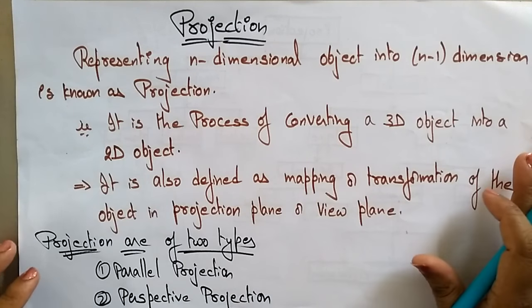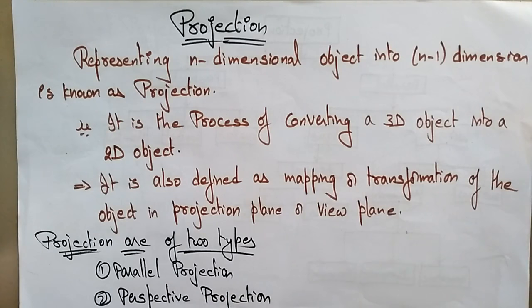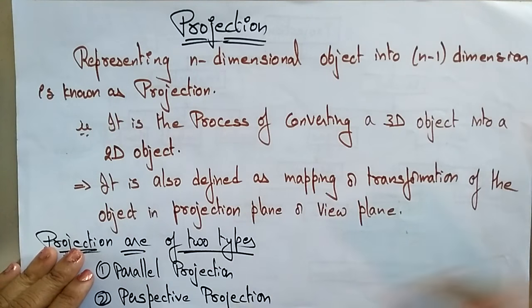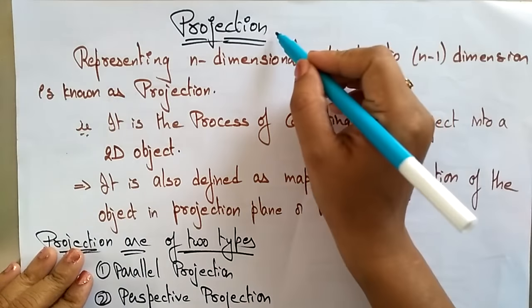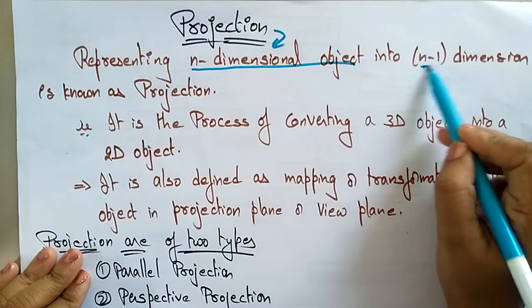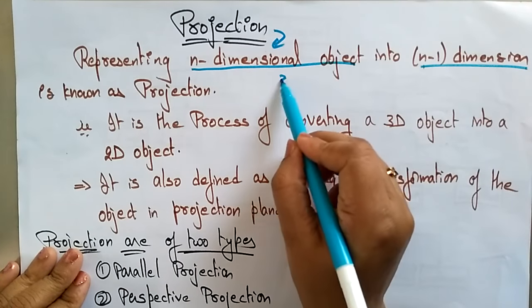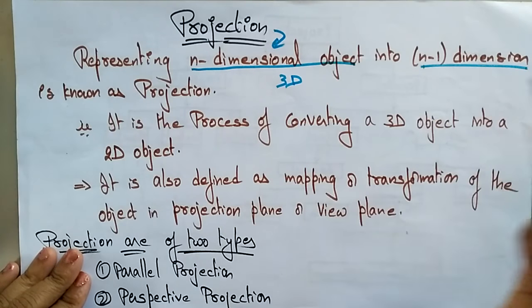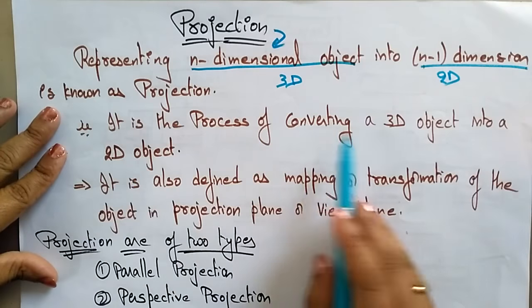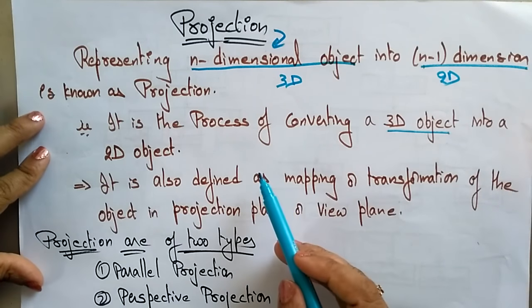Welcome back students. Let's continue with computer graphics. The next topic is projection. A projection is representing an n-dimensional object into n-minus-one-dimensional. So if you take 3D objects, it is going to represent those 3D objects in 2D — that is what you call a projection. It is a process of converting 3D objects into 2D objects.